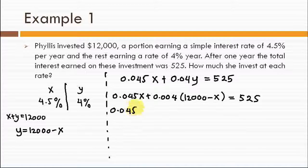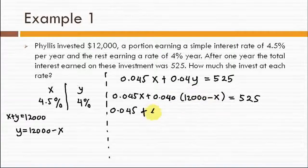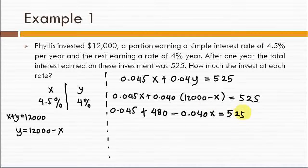So we have 0.045x plus 4% of y but now y is 12,000 minus x must be equal to 525. Let's simplify. This should be 0.04 plus this number times that will be 480 minus 0.040x equals 525. Now we don't want this number because this number has no x on it. So we move this to the other side. We can simplify this minus that.